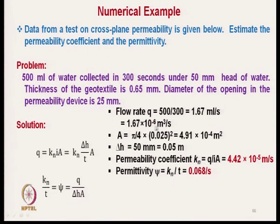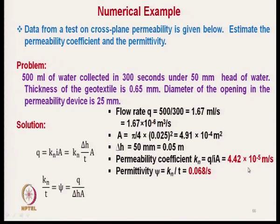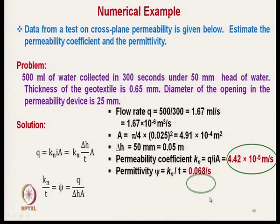From this data, flow rate = 500/300 = 1.67 mL/s. Area is calculated from the 25 mm diameter opening. Water head = 50 mm = 0.05 m. The permeability coefficient k_n comes out to be 4.42 × 10⁻⁵ m/s and permittivity is 0.068 per second. We can calculate all these parameters from a given dataset.